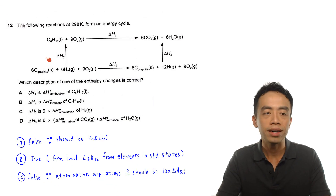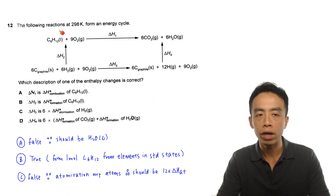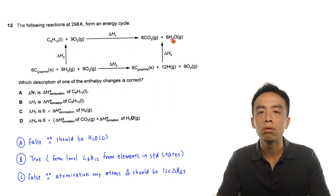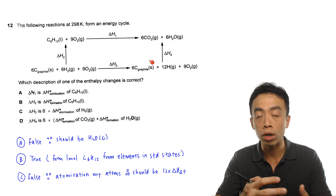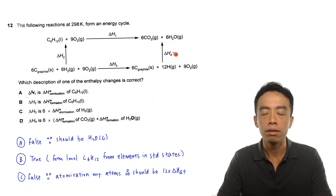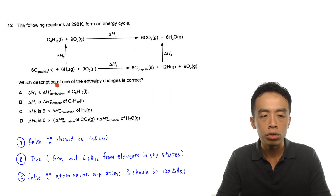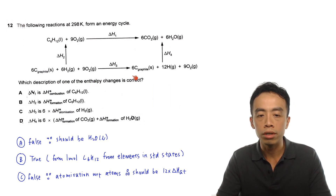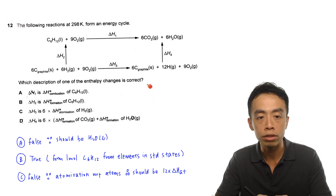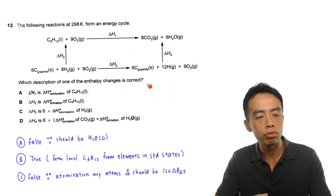Question 12 goes something like this. The following reactions at 298K form an energy cycle. We have 4 equations to consider: ΔH1, ΔH2, ΔH3, and ΔH4. The question asks which description of one of the enthalpy changes is correct — meaning 3 of them are false and only 1 is true. So we want to run through each one of them.